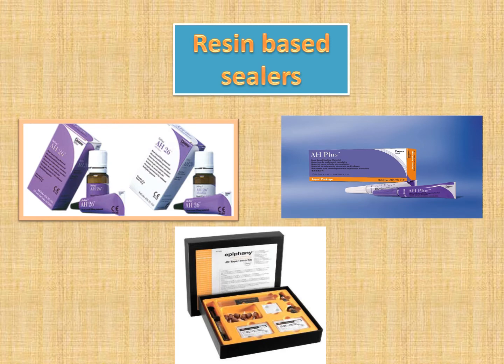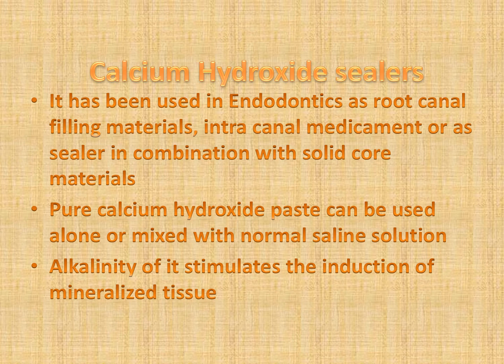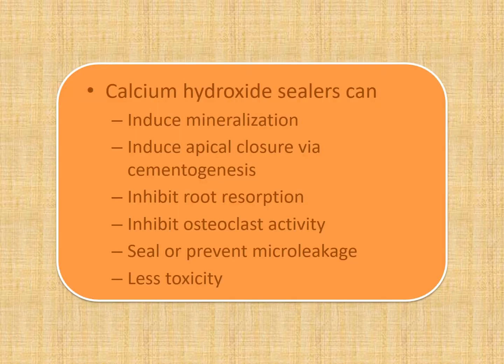Coming to resin-based sealers — examples are AH26, AH Plus, and Epiphany. Examples for calcium hydroxide-based sealers are Apexit and Sealapex. Calcium hydroxide has been used in endodontics for various purposes: as a root canal filling material, intracanal medicament, and as a sealer in combination with a solid core material. Pure calcium hydroxide base can be used alone or mixed with normal saline solution. The alkalinity of calcium hydroxide stimulates the induction of mineralized tissue. Properties of calcium hydroxide sealers include: inducing mineralization, inducing apical closure via cementogenesis, inhibiting root resorption, inhibiting osteoclast activity, sealing or preventing micro-leakage, and being considered very low in toxicity.